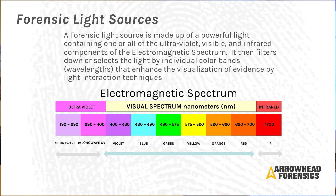A forensic light source is made up of a powerful light containing one or all of the ultraviolet, visible, and infrared components in an electromagnetic spectrum. It then filters down or selects the light by individual color bands or wavelengths, then enhances the visualization of evidence by light interaction techniques. This is the electromagnetic spectrum.